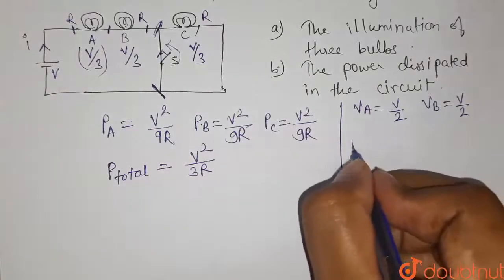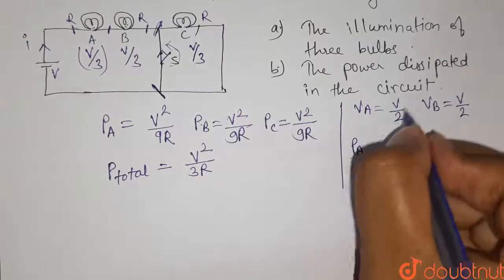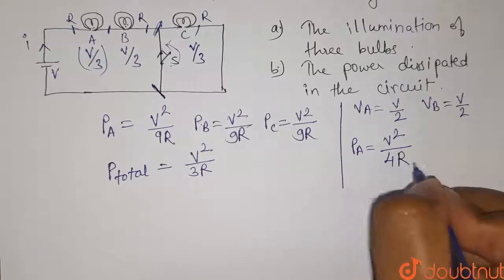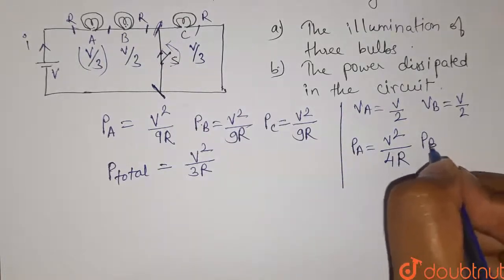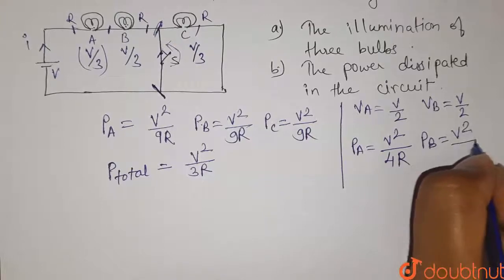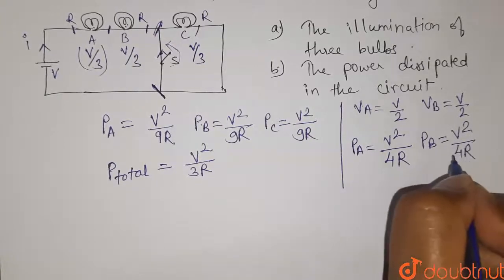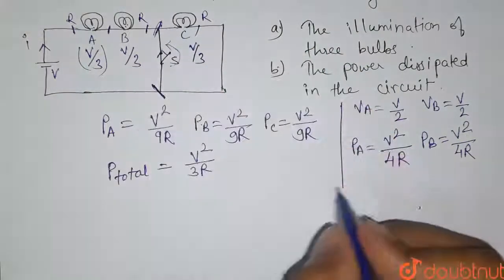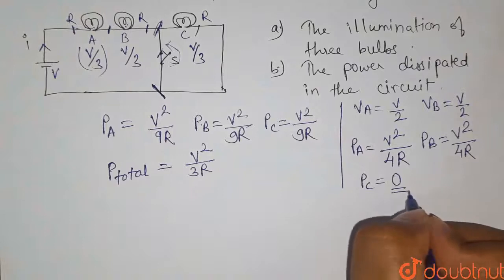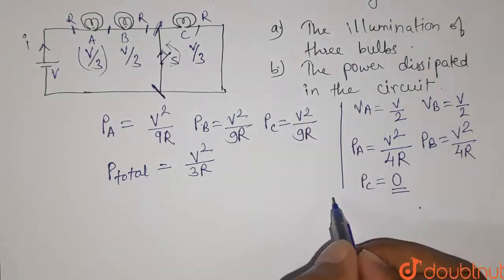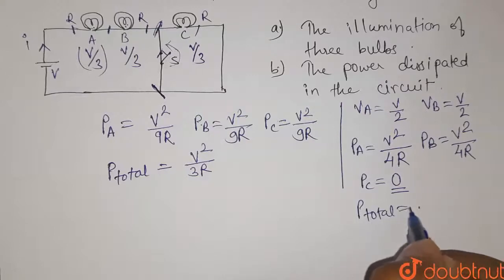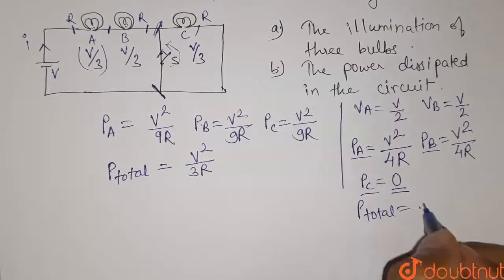The power consumed by bulb A is V²/4R, and for bulb B it is also V²/4R. For bulb C, since the potential difference is zero, the power consumed is zero. The total power in the second case is PA + PB + PC, which equals V²/2R.